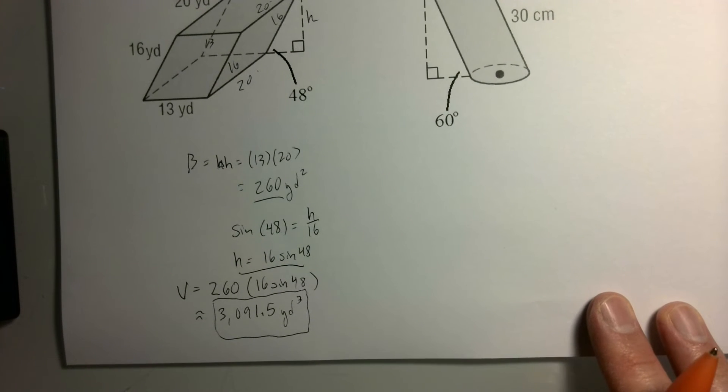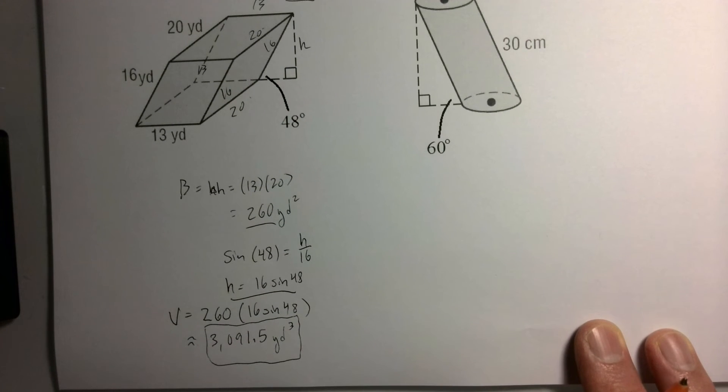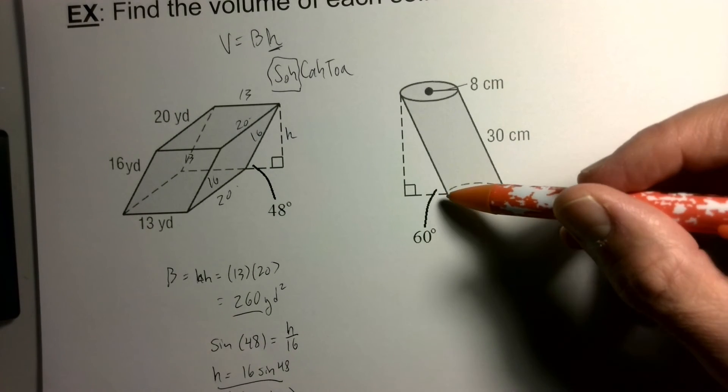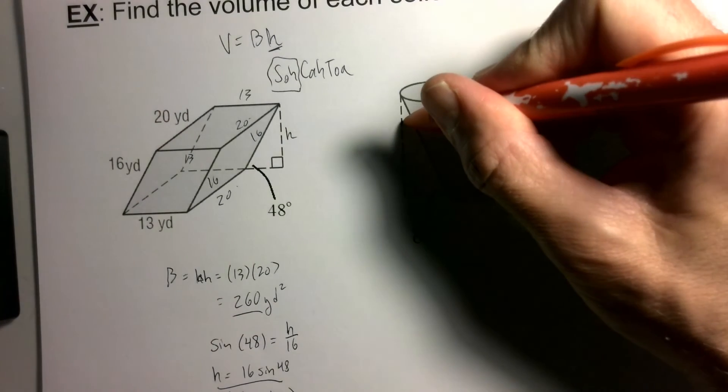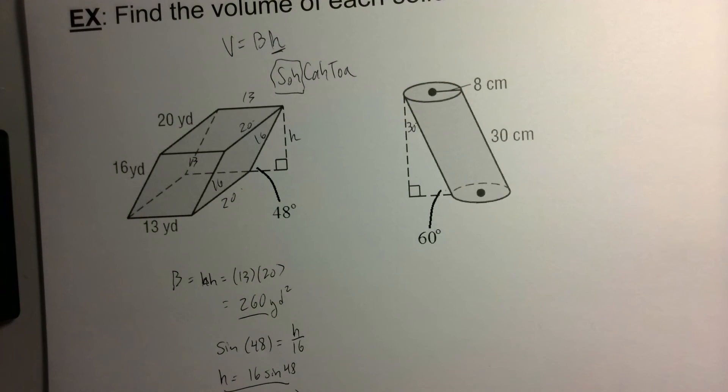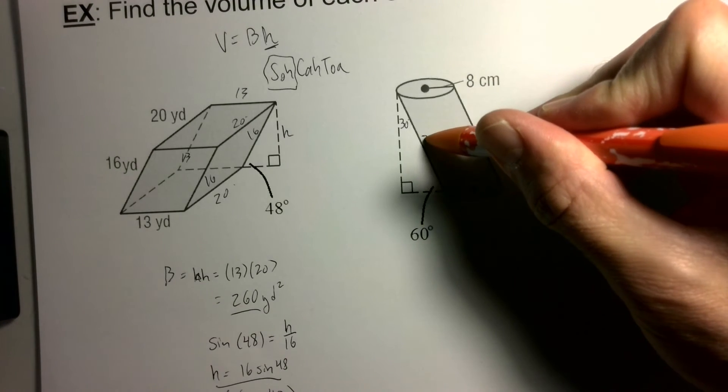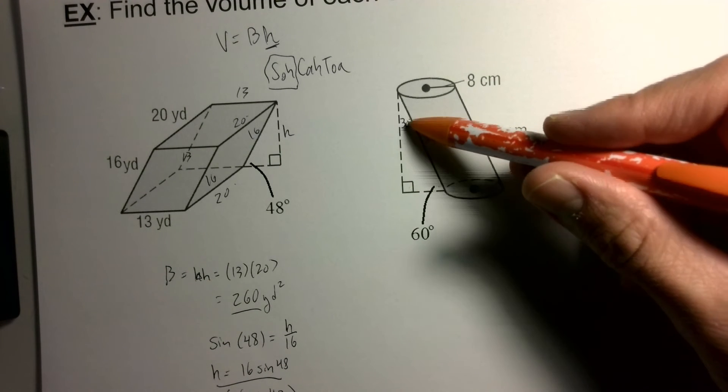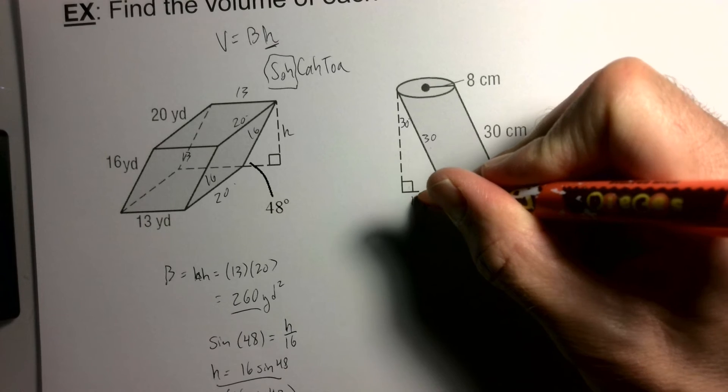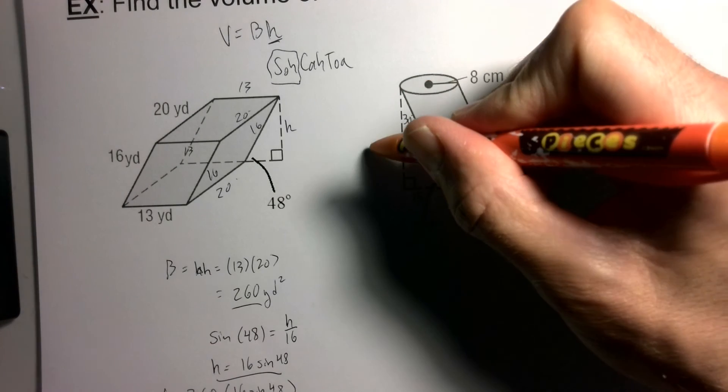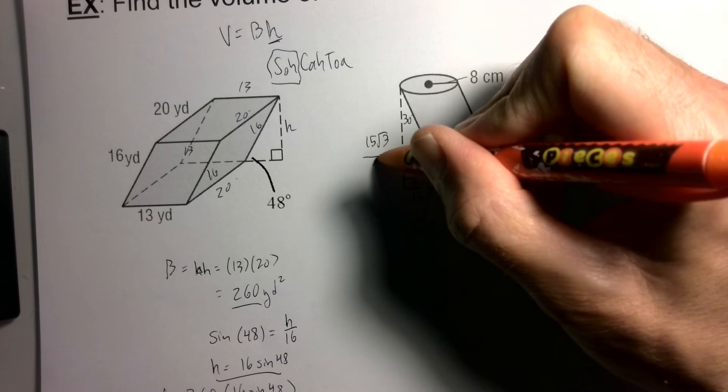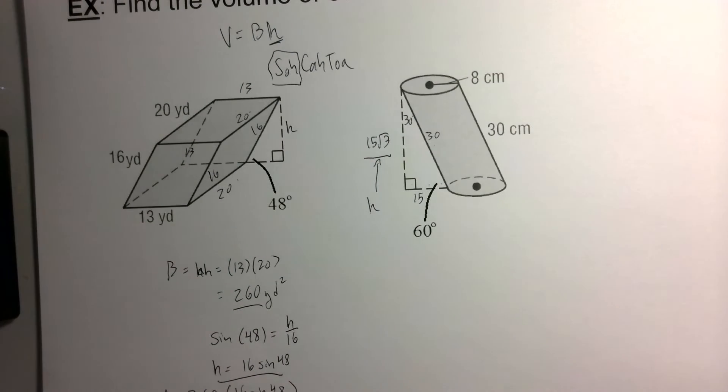Cool. So again, the harder part on these problems is typically finding the height. Let's go ahead and look at this cylinder. I've got - oh man, this is another one of those 30-60-90 triangles. This hypotenuse is 30. Opposite that is 30, opposite this would be 15, and then opposite 60 would be 15√3. So this right here is the height of our cylinder.